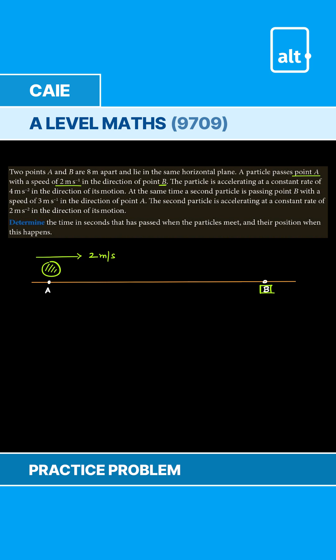The particle is accelerating at 4 meter per second square so this is also labeled in the same direction towards B.